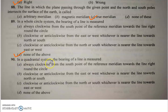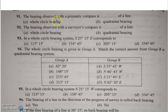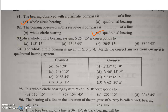Q90: In the quadrantal system, the bearing of a line is measured clockwise or anticlockwise from north or south, whichever is nearer to the line, towards east or west. Q91: The bearing observed with a prismatic compass is the whole circle bearing of the line. Q92: The bearing observed with a surveyor's compass is the quadrantal bearing of the line.